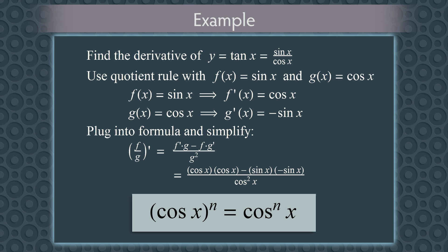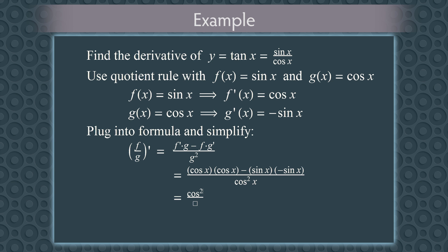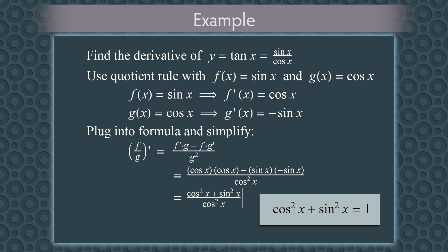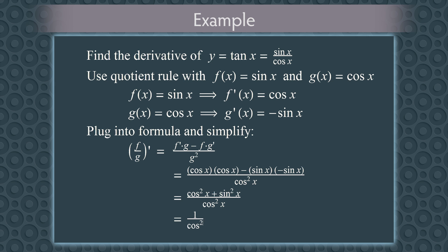Remember, cosine of x to the nth power can be written as cosine to the nth power of x — a common shorthand notation that reduces parentheses. So we're left with cosine squared x plus sine squared x, all over cosine squared x. An identity from trigonometry is that cosine squared x plus sine squared x equals 1 for all x. So this simplifies to 1 over cosine squared x, which we can rewrite as (1 over cosine of x) squared. And since 1 over cosine of x is secant of x, we get secant squared x. So the derivative of tangent x is secant squared x.